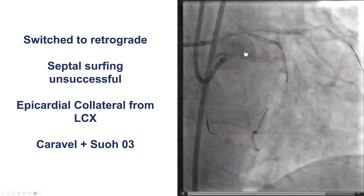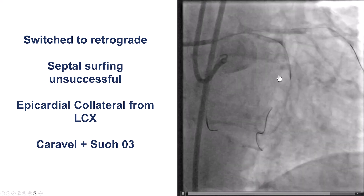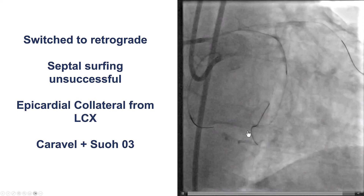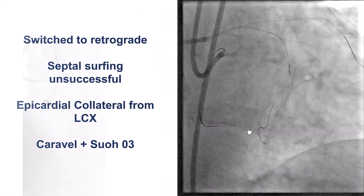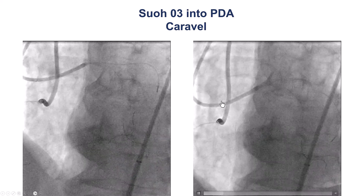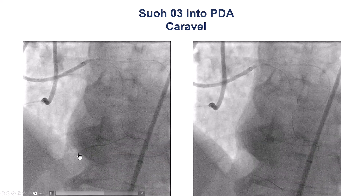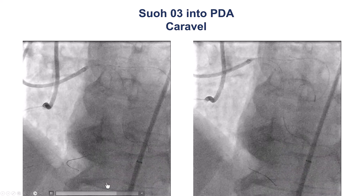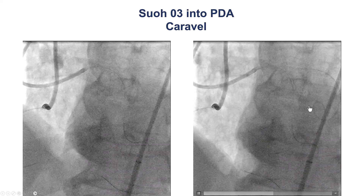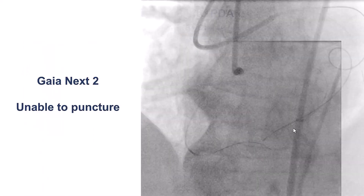We engaged the epicardial collateral from the circumflex with a Caravel microcatheter and an Asahi Sion 3 guidewire, which is the safer one for those collaterals. After gentle manipulation of the wire, we were able to deliver it into the right posterolateral branch, and then it was advanced into the right PDA. You can see the big bend that was successfully crossed with the Caravel microcatheter.